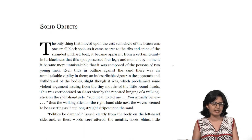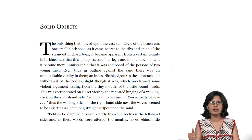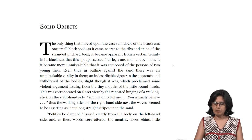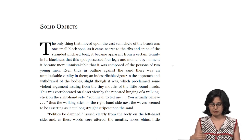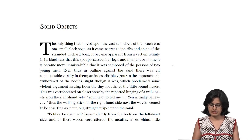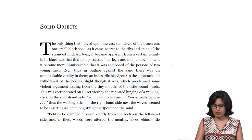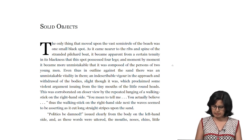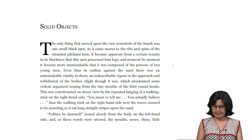As the story opens, we find two upper-class males at the beach. I will read out the first segment: 'The only thing that moved upon the vast semicircle of the beach was one small black spot. As it came nearer to the ribs and spine of the stranded pilchard boat, it became apparent from a certain tenuity in its blackness that this spot possessed four legs. And moment by moment, it became more unmistakable that it was composed of the persons of two young men.'